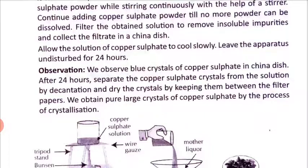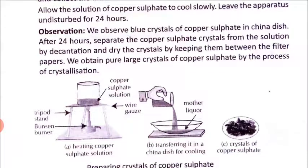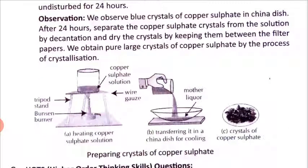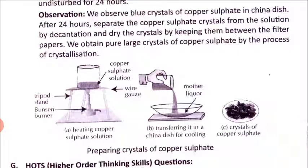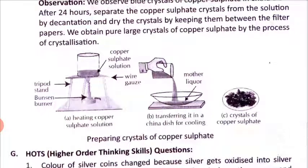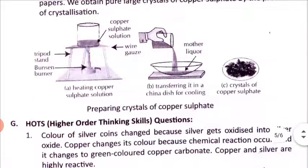After 24 hours, separate the copper sulfate crystals from the solution by decantation and dry the crystals by keeping them between filter paper. In this way, we obtain pure large crystals of copper sulfate by the process of crystallization.